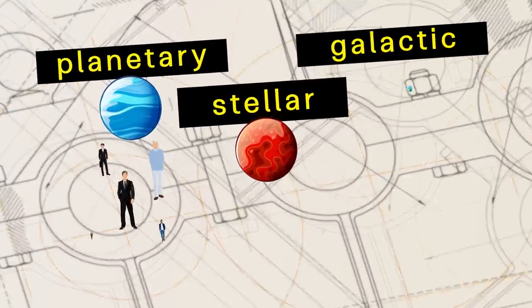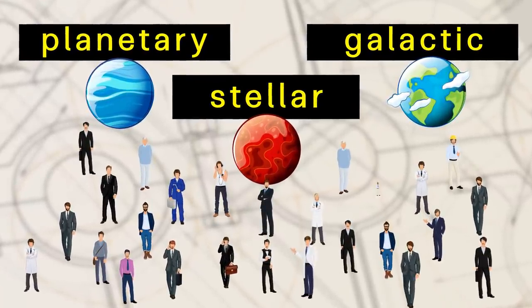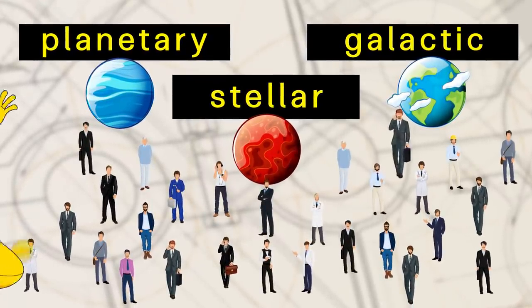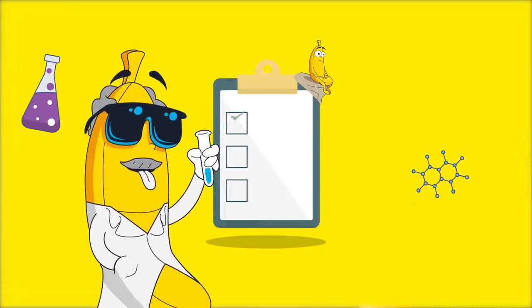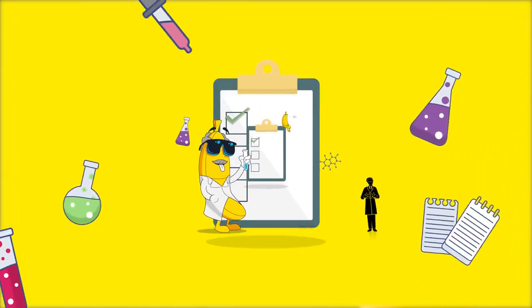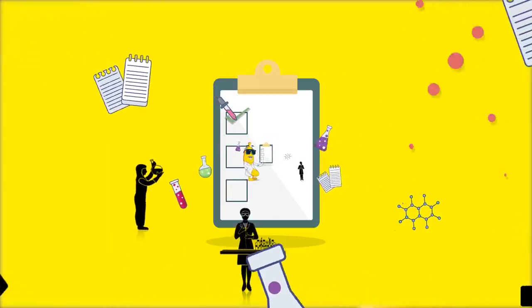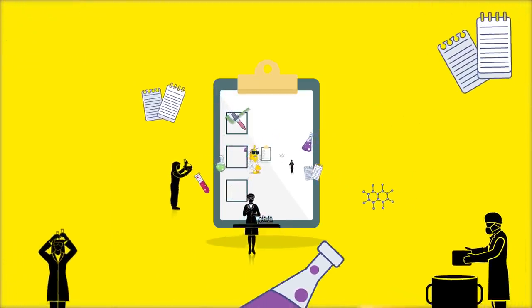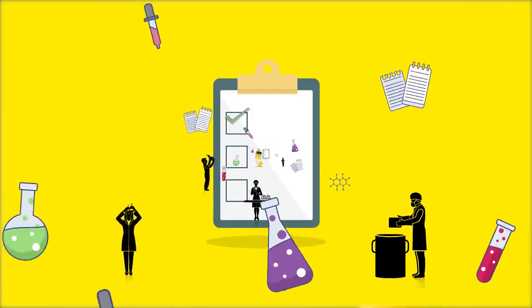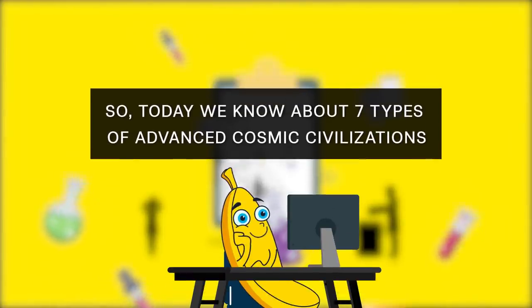Planetary, stellar and galactic civilization. Today, humanity seems to fit in any of these types, but it's not so simple. Being only the beginning of the types of civilizations theory, the Kardashev list was edited and expanded based on recent developments in nanotechnology, biotechnology and quantum physics. Although it is impossible to predict the precise features of such advanced civilizations, their broad outlines can be analyzed using the laws of physics. So, today we know about seven types of advanced cosmic civilizations.